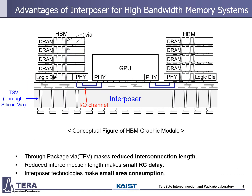One of the core technologies of this interposer is through-package via (TPV). Interposers can reduce interconnection length because TPV can be used in comparison with the wire bonding packaging method. Reduced interconnection length results in small RC delay.